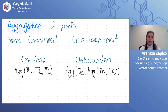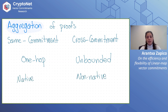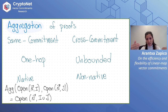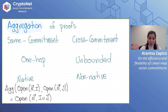We also distinguish between native and non-native aggregation for subvector or individual position openings. In native aggregation of openings to subsets, the aggregation looks exactly like a fresh opening for the union of the subsets. In non-native aggregation, the aggregated proof still proves the opening of the union, but it involves some randomness and doesn't look like a fresh proof.